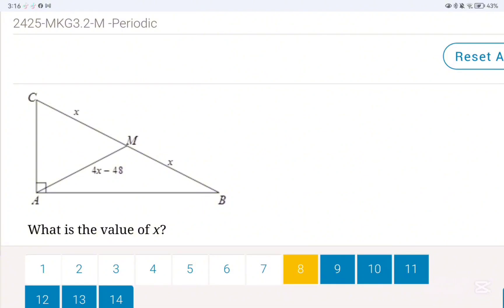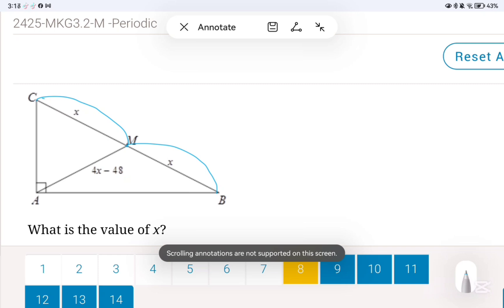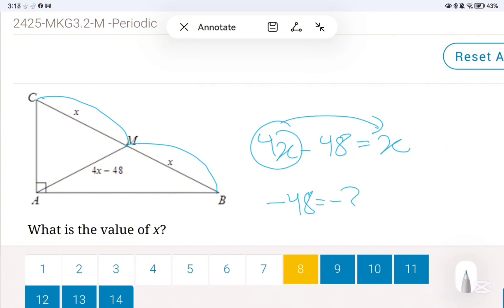Here they already gave us half of the hypotenuse, which is x, so then 5x minus 48 equals x. Take x to one side and then 48 to the other side, you get 3x equals 48, and then x equals 16.